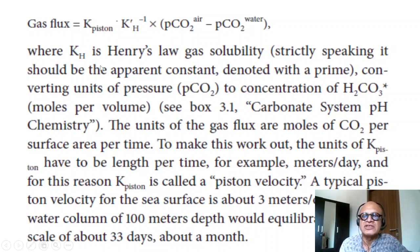KH is the Henry's law gas solubility converting the units of pressure pCO2 to concentration of H2CO3 star. Remember the hydrated and the dissolved CO2 that we talked about before in moles per volume. We talked about the carbonate system pH chemistry before: CO2 plus H2O, H2CO3 going to HCO3 minus H plus, and then HCO3 minus going to CO3 minus minus plus H plus and so on.